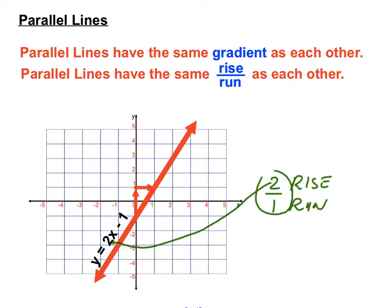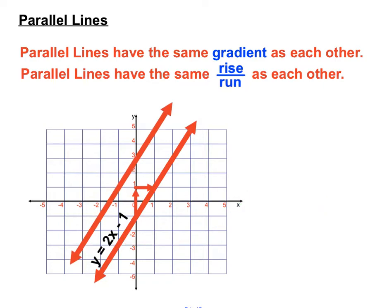Now let's have a look at another line with the same gradient. Here's a line. It looks like it's parallel. Now parallel lines never meet. They go in the same direction and never meet, a bit like train tracks. That certainly looks like train tracks to me. Let's have a look at that one a bit more closely.